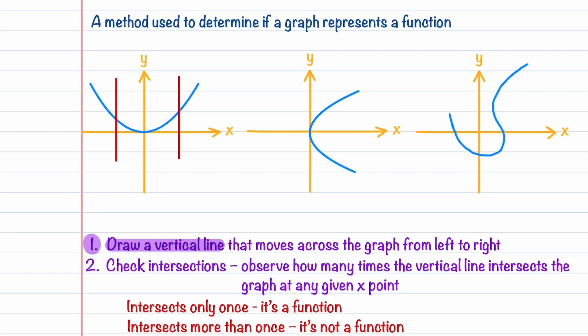We're now going to check intersections. We need to observe how many times each vertical line intersects the graph. Our first line intersects the graph once here, and then our second line intersects the graph once here. Since these vertical lines intersect our graph only once, this graph represents a function.